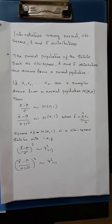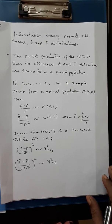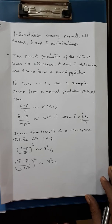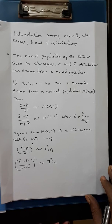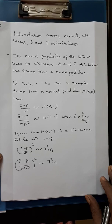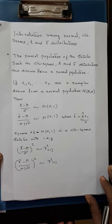Welcome to Sajitra Statistics Classes. Let us discuss interrelation among normal, chi-square, t, and f distributions. We know that the parent population of chi-square, t, and f distributions are normal. We are taking samples from a normal population for preparation of chi-square statistics, t statistics, and f statistics.